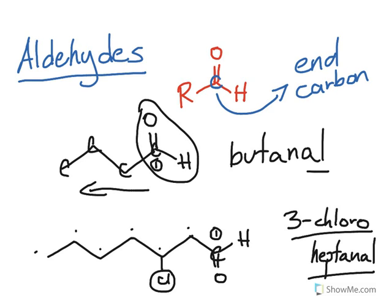Check your worksheets. Anytime you see the -al ending, that means you have an aldehyde. Remember that the aldehyde carbon will always be carbon number one in the chain.